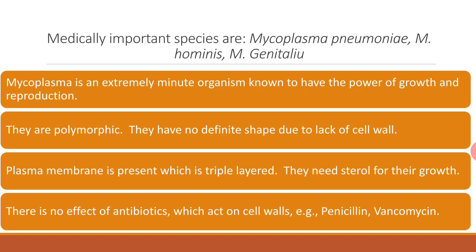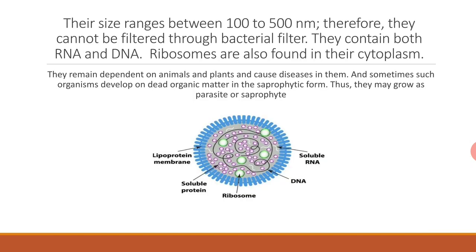Antibiotics like penicillin and vancomycin do not work on mycoplasmas because normally these antibiotics block the formation of the cell wall. Because of the absence of a cell wall in mycoplasmas, these antibiotics have no target. Their size ranges between 100 to 500 nanometers; therefore, they cannot be filtered through a bacterial filter. They contain both RNA and DNA.